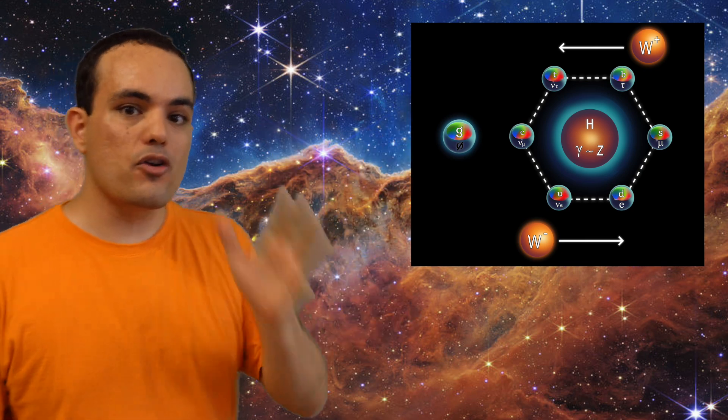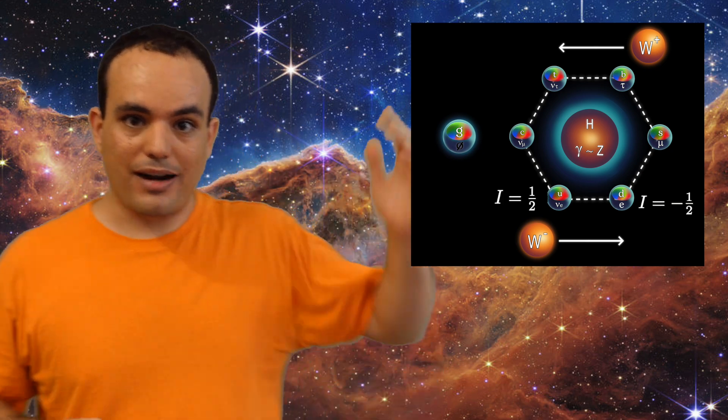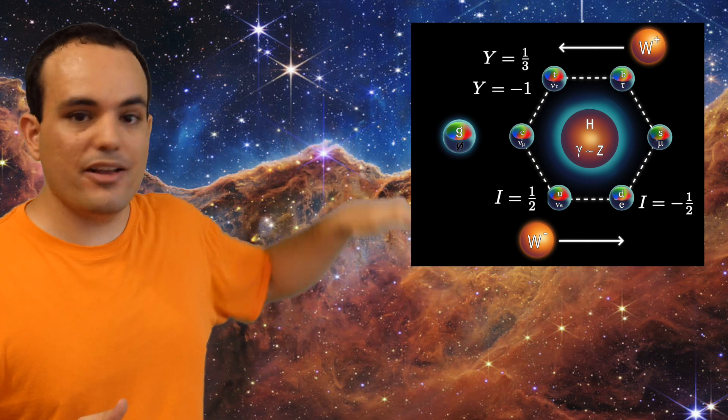And that's it. That's the super awesome standard model diagram. All the particles in the vertices of the hexagon are fermions. All the particles inside the hexagon are neutral bosons. All the particles outside the hexagon are non-neutral bosons. And the fermions themselves are arranged by their isospin, hypercharge, and generation.